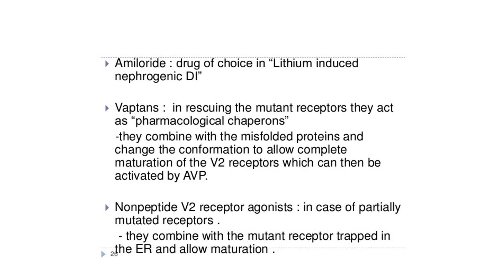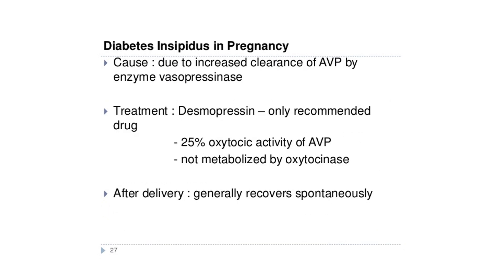For lithium-induced nephrogenic DI, amiloride is the drug of choice. Vaptans can also be used, acting as pharmacological chaperones to rescue mutant receptors. A pharmacological chaperone contains small molecules that enter cells and serve as molecular scaffolding so that normally misfolded proteins can fold and route correctly within the cell. In the case of vaptans, they combine with misfolded proteins and change the conformation to allow complete maturation of V2 receptors, which can then be activated by AVP. Non-peptide V2 receptor agonists can also combine with mutant receptors trapped in the endoplasmic reticulum and allow maturation.